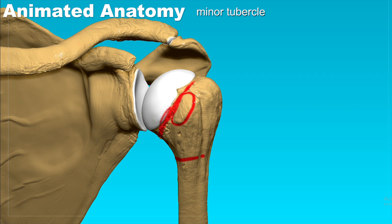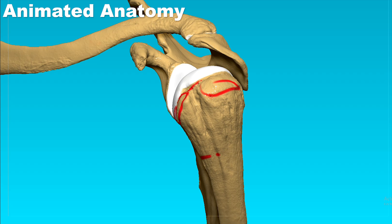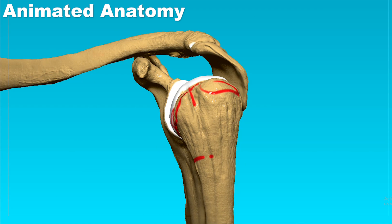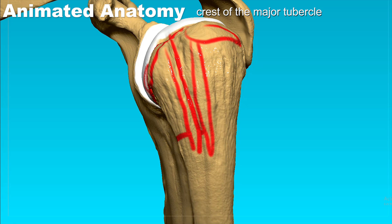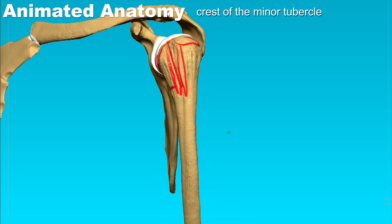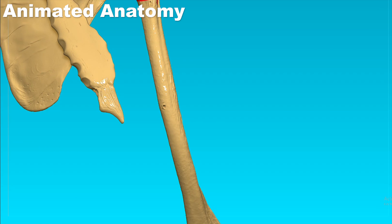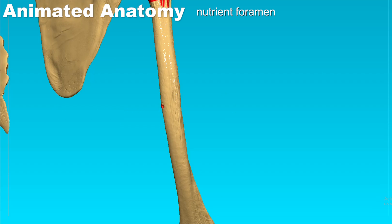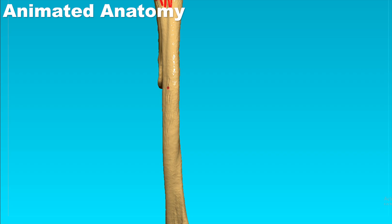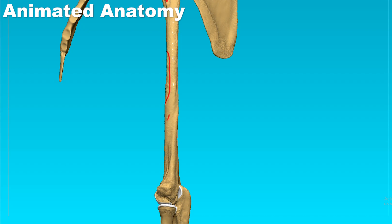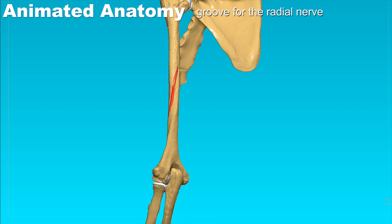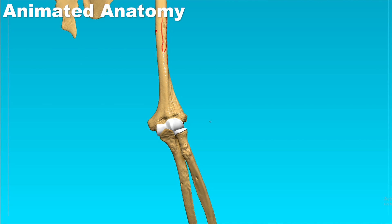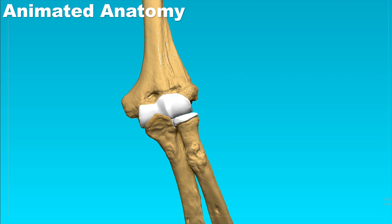The humerus also has the minor tubercle and the major tubercle. Between these is the intertubercular groove, and the lips of that groove are formed by the crest of the major tubercle and the crest of the minor tubercle. Zooming out, we can see the nutrient foramen, and on the opposite side the deltoid tuberosity for the deltoid muscle. That tuberosity is bordered by the groove for the radial nerve.